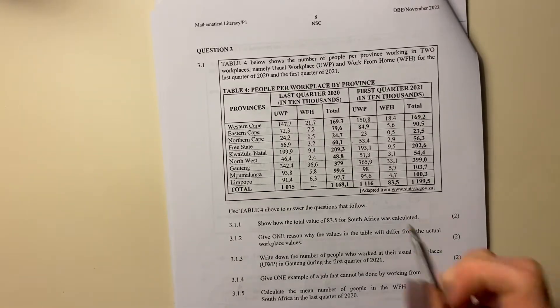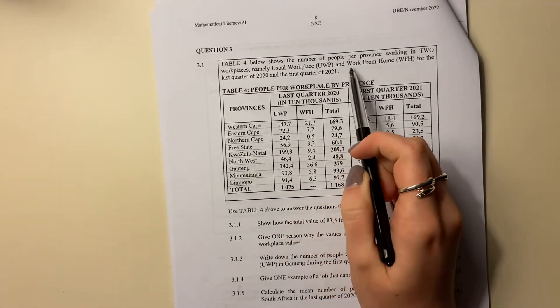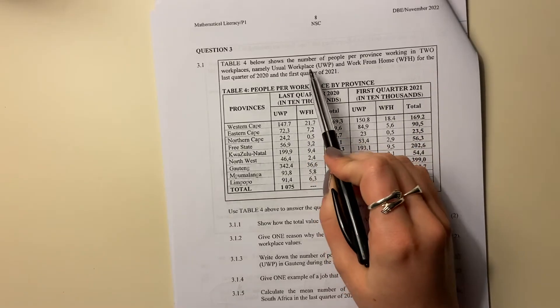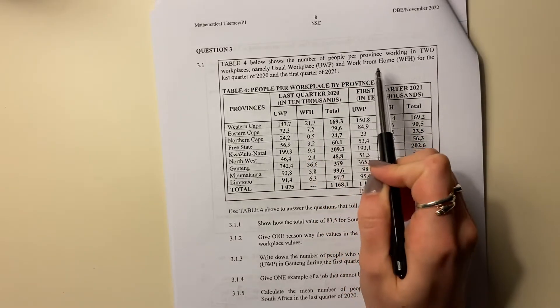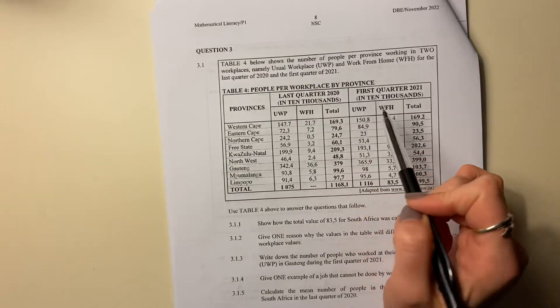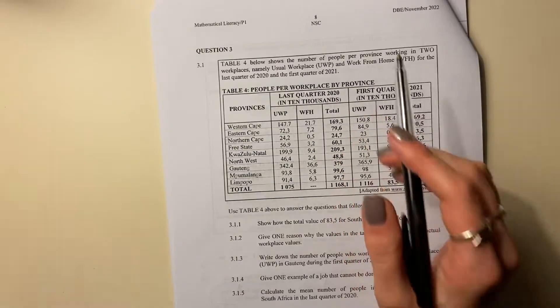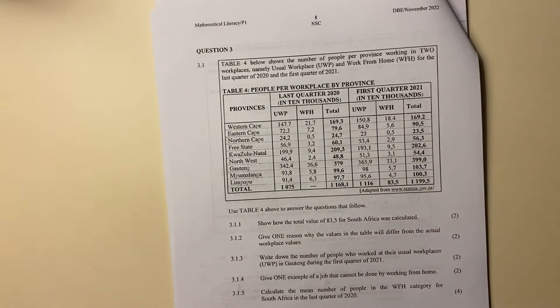Let's move on to question three. Question three says table four below shows the number of people per province working in two workplaces, namely usual workplace and work from home. We know that with COVID, people were working from home for the last quarter of 2020 and the first quarter of 2021.